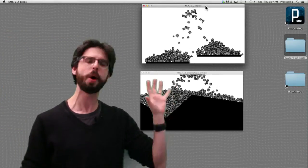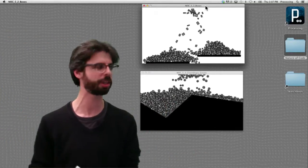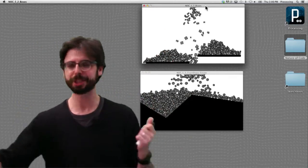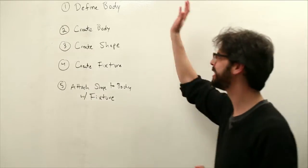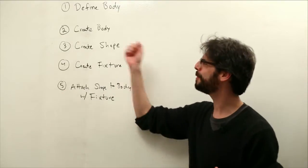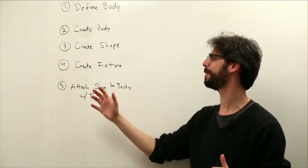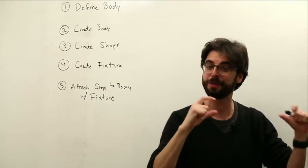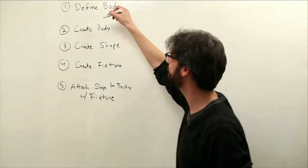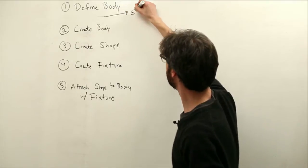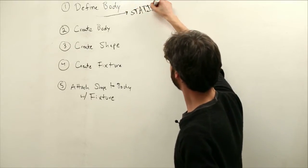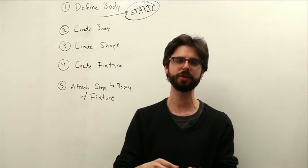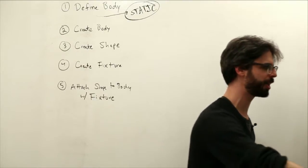In this video we're going to look at both of these and quickly look at the code. The good news is that the static body is incredibly simple. If you remember, we had steps: define a body, create a body, create a shape, create a fixture — all those steps. For the fixed platform shape that doesn't move, we only need to change one thing in step one: we need to have a static body instead of a dynamic body.